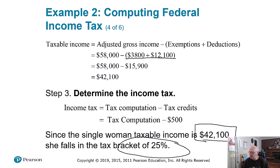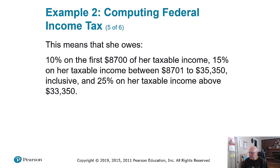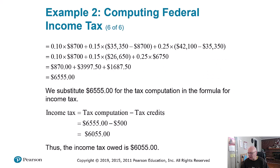That puts her in a tax bracket from the table we saw previously. According to the tax table, she owes 10% on the first $8,700, then 15% on everything between $8,701 and $35,350, and 25% on everything over $35,350. It gets a little complicated, but you can follow this on your own. The final result is that the single woman owed $6,055. Remember, some of that was probably already taken out of her income, so she won't necessarily write a check for $6,055 — that's how much she owes for the year.